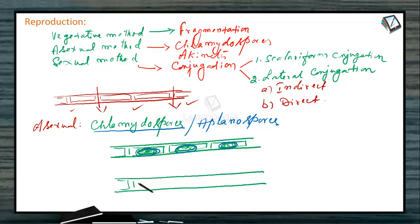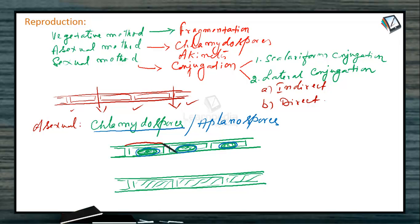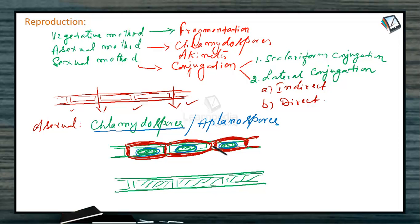Akinetes are the second type of asexual structure. In akinetes, the protoplasm does not condense and the cell remains as it is. Each cell develops a thick wall around it. This thick wall makes it resistant to unfavorable conditions, and they can survive for long periods under drought conditions.